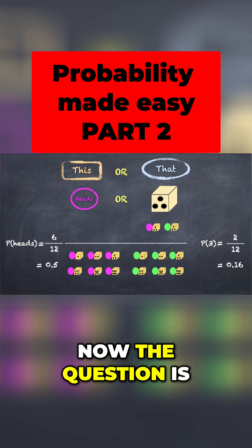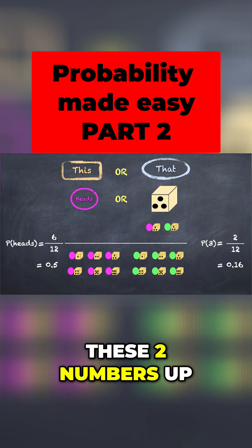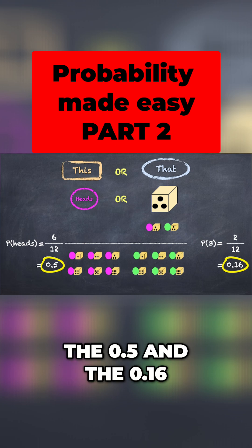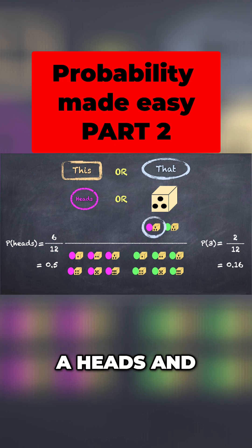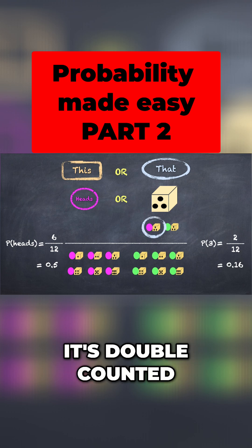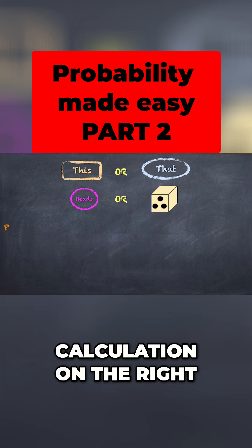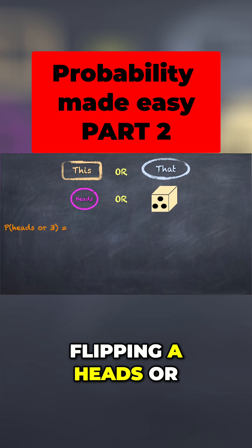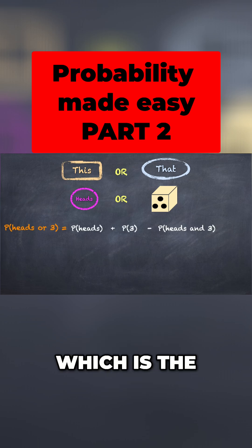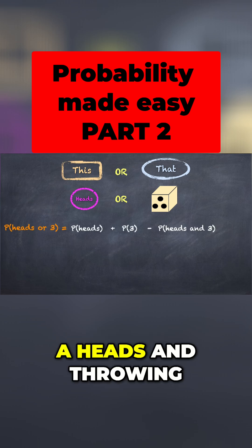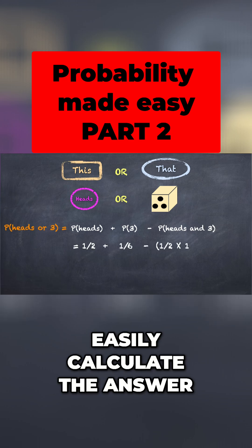Now the question is, can we simply add these two numbers up, the 0.5 and the 0.16? And the answer is no, we can't. And it's because of this scenario in which we spin a heads and we throw a 3, it's double counted. It's included in the calculation on the left and the calculation on the right. So to get the probability of flipping a heads or throwing a 3, we need to add them together and then subtract that double count, which is the probability of getting a heads and throwing a 3. And then we can easily calculate the answer.